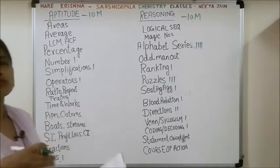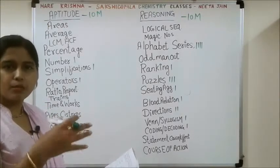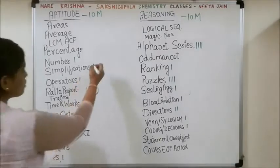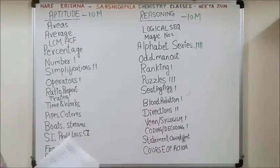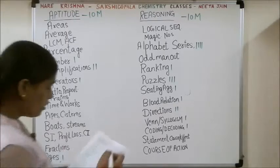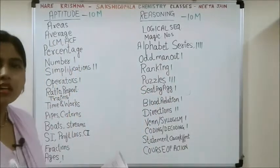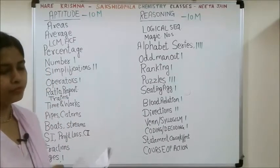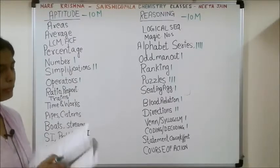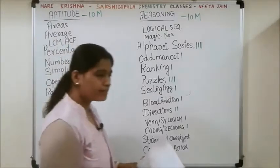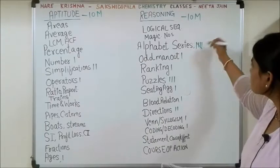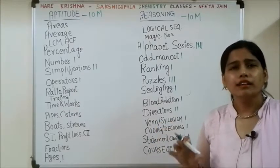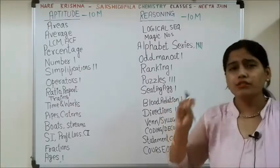Problems on ages: for example, a father is four times older than his son — questions about ages of father, mother, and son. That covers problems on ages. Then there is another question based on simplification, and then comes odd man out — four words are given, three are similar, and you have to eliminate the word that is uncommon in the group. Then there is again one question from the alphabet series. Alphabet series has appeared five times in the KVS PGT paper, so you must learn each and every type of alphabet series question.